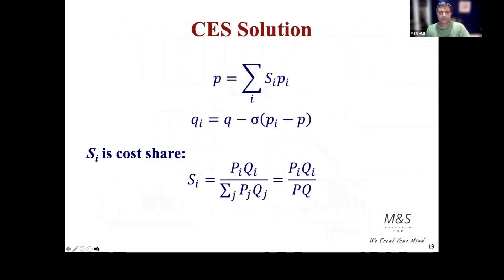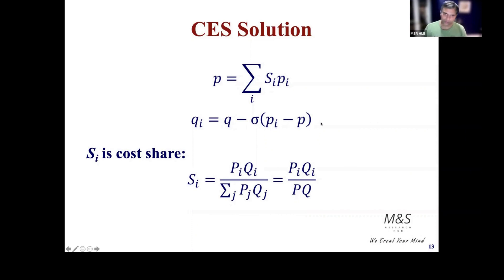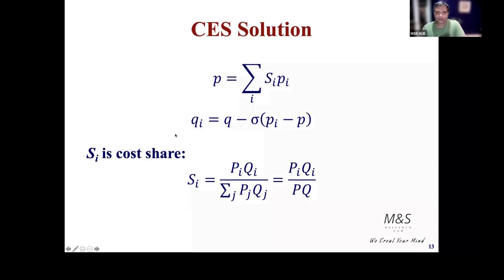Going back to the solution: for each level, price is the weighted sum of input prices, and the quantity of an input is quantity of output minus the substitution term. Another way to think about it: this is the expansion effect and this is the substitution effect — very common in microeconomics. The quantity of labor demanded increases because output increases (expansion effect), so since you're producing more you need more labor. That is the impact of q.